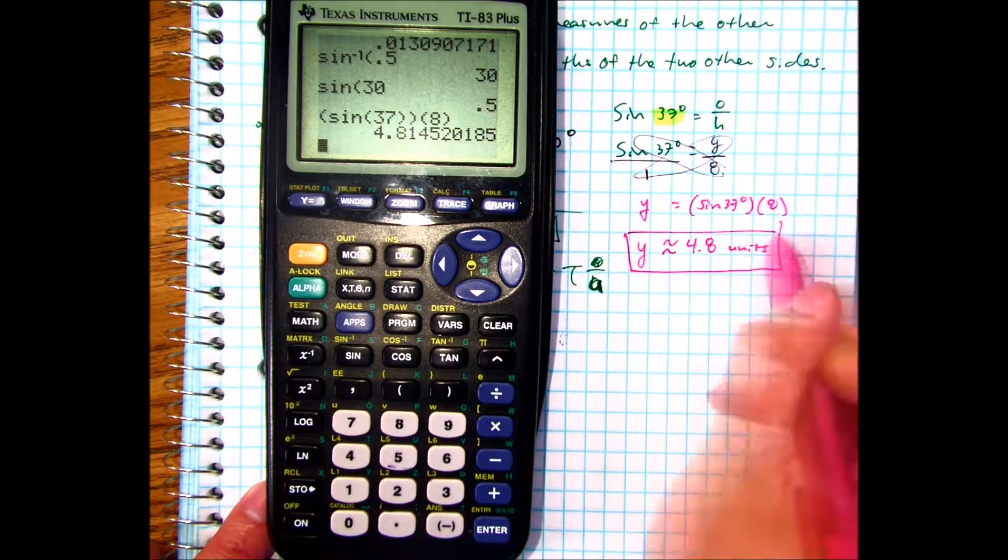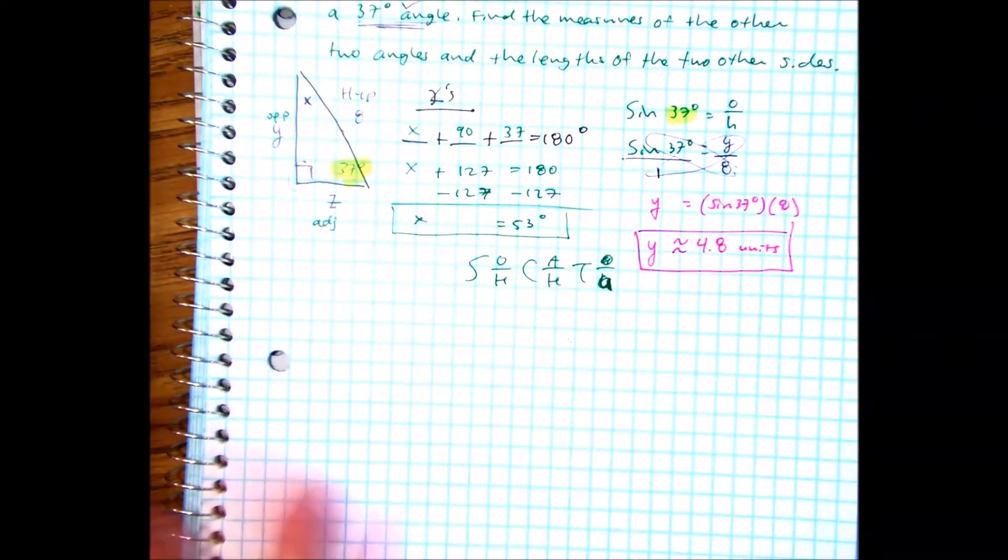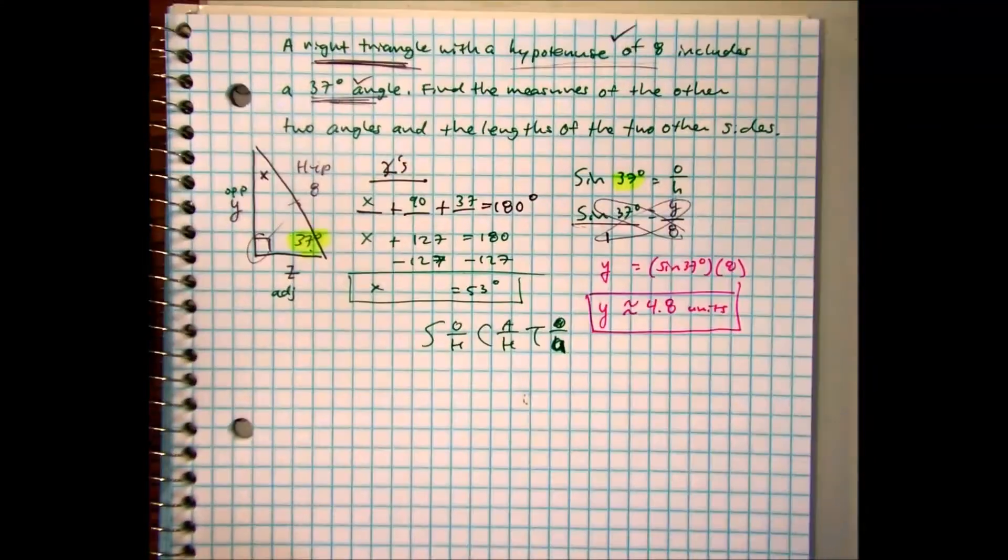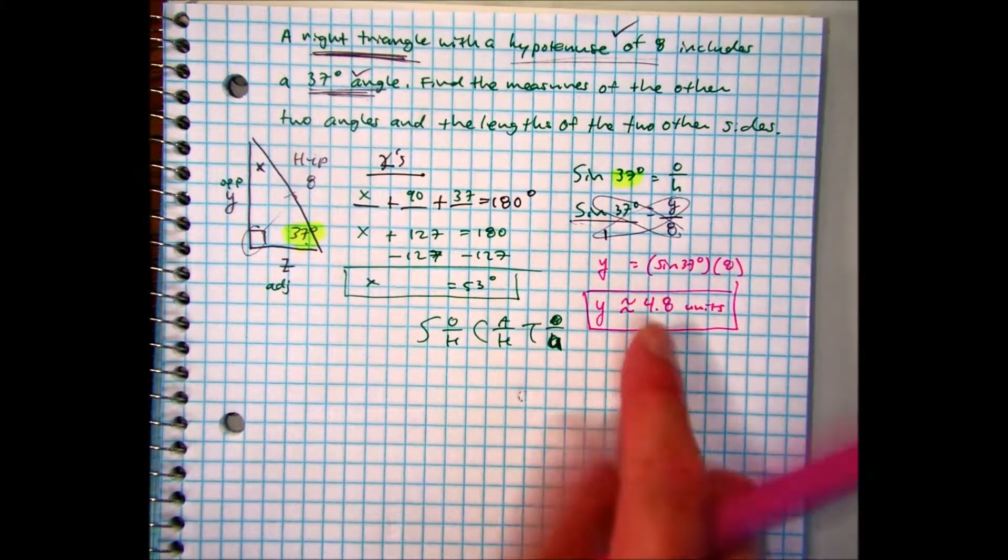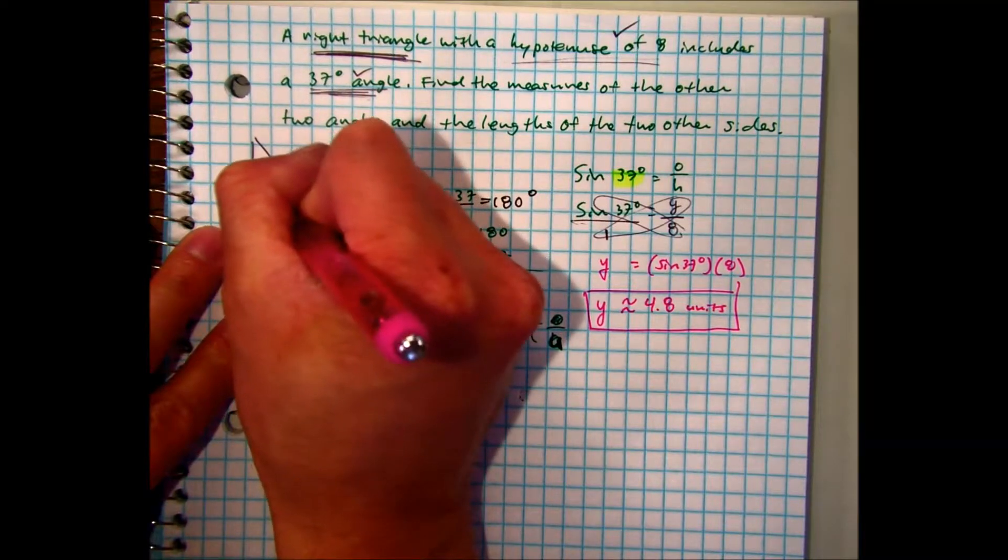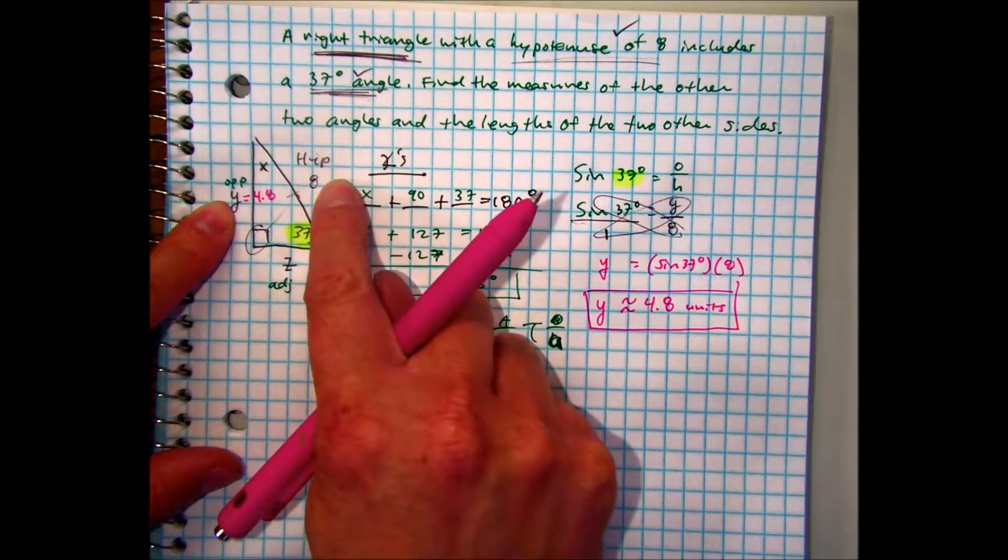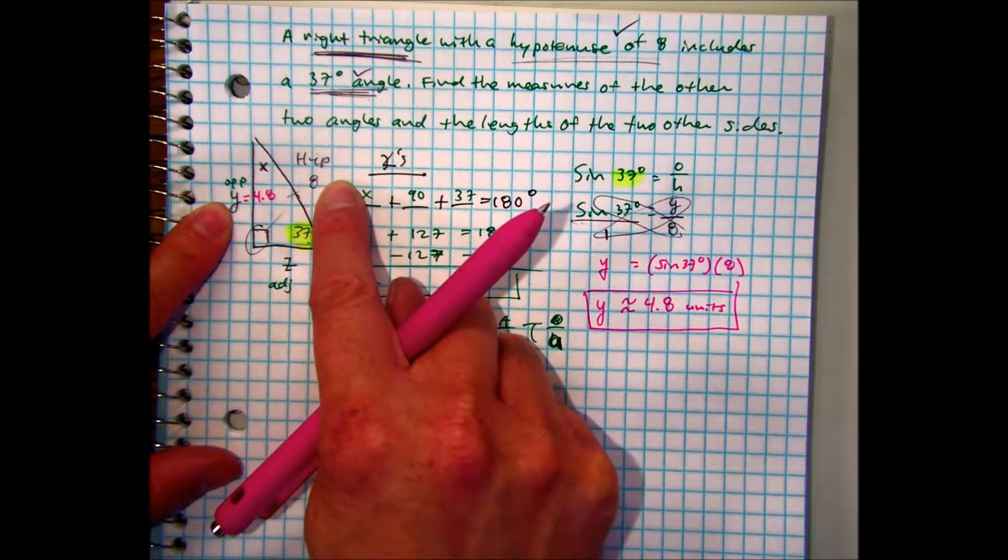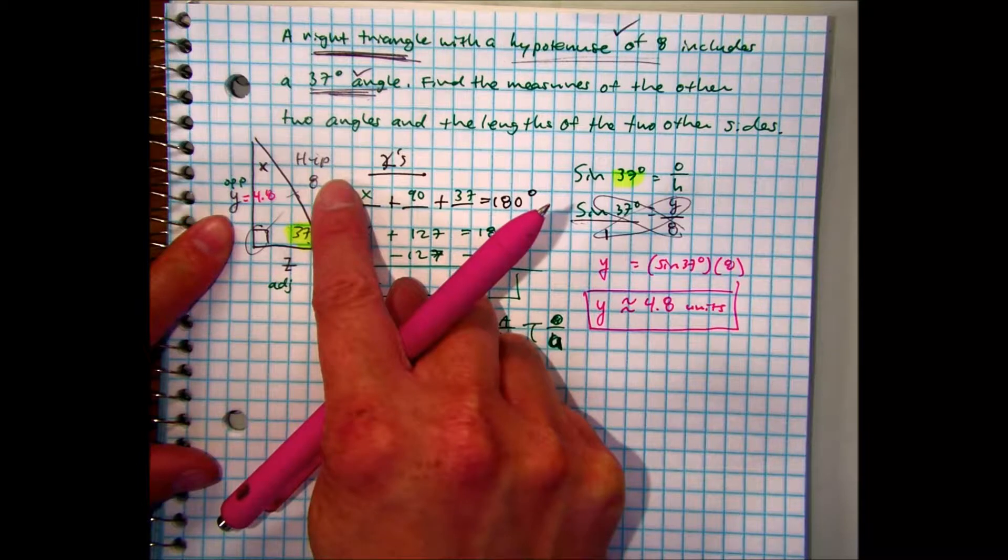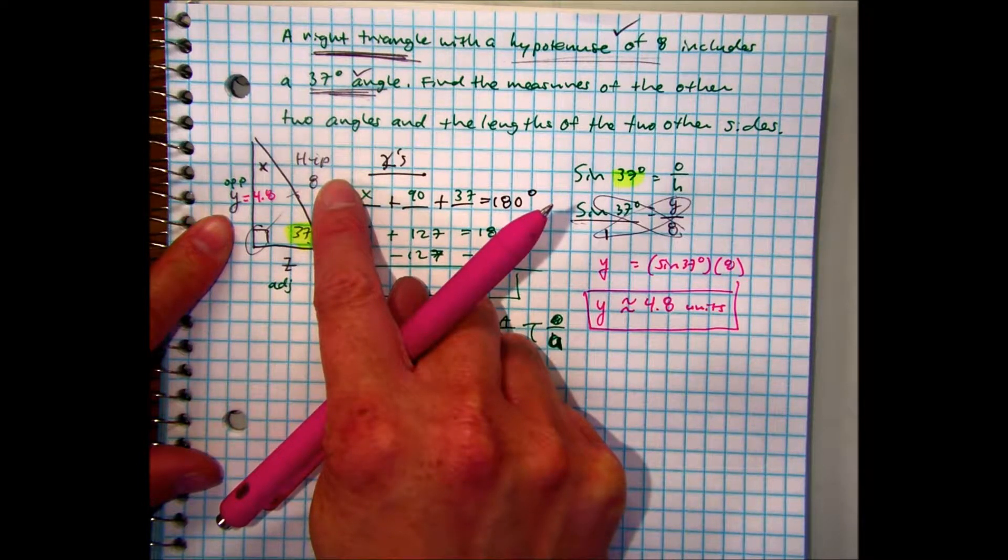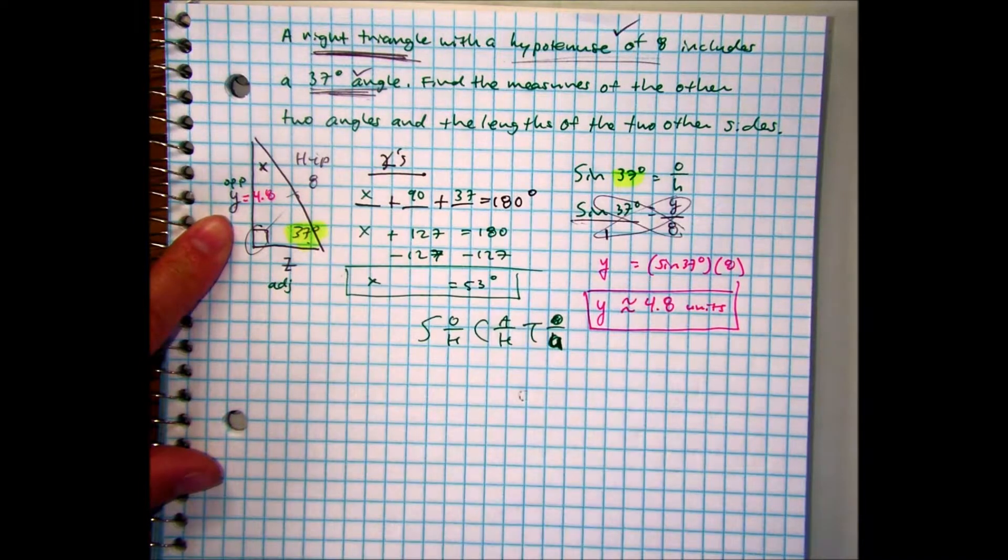Here, rounded to the nearest tenth, I have 4.8 units. Raise your hand if you got approximately 4.8. Okay, word to the caution. You could use one side and the second side. You have two sides of a right triangle, you can use Pythagorean theorem. But you guys remember my story. What happens if you go to the bathroom and you don't wash your hands? And then you prepare your brother's food?